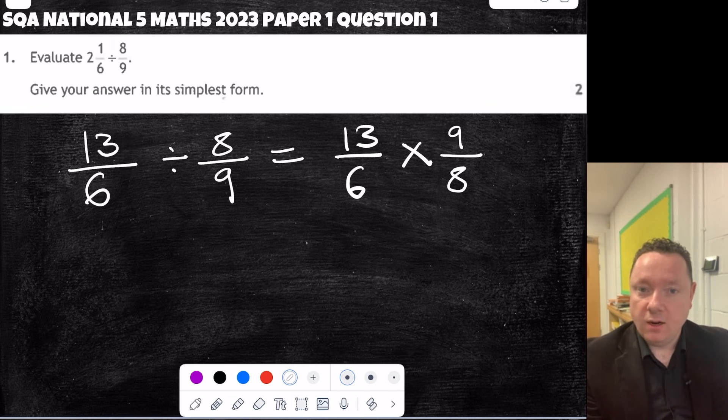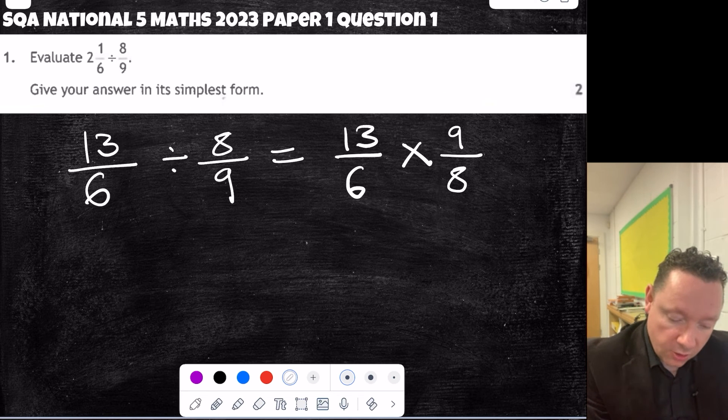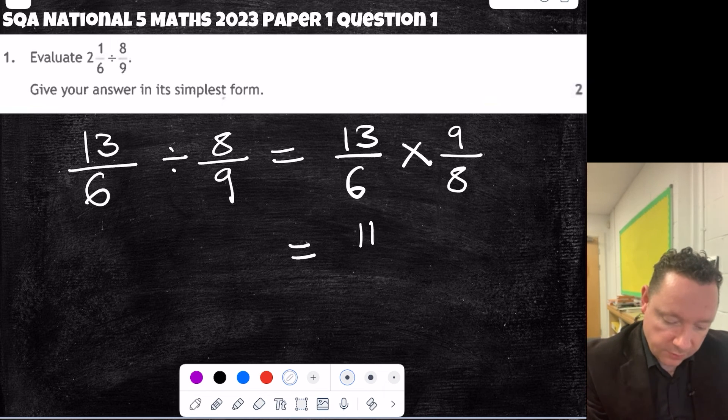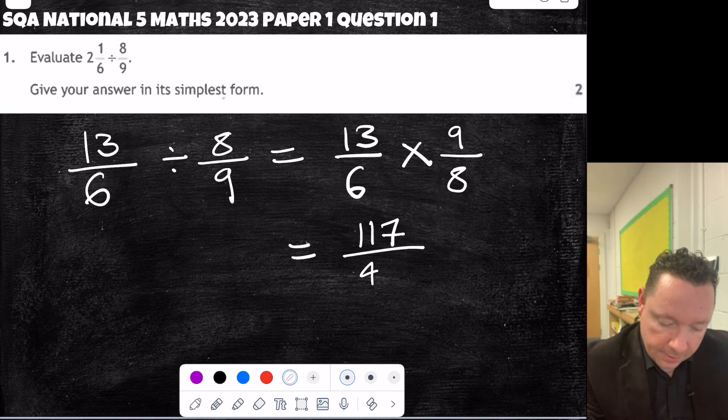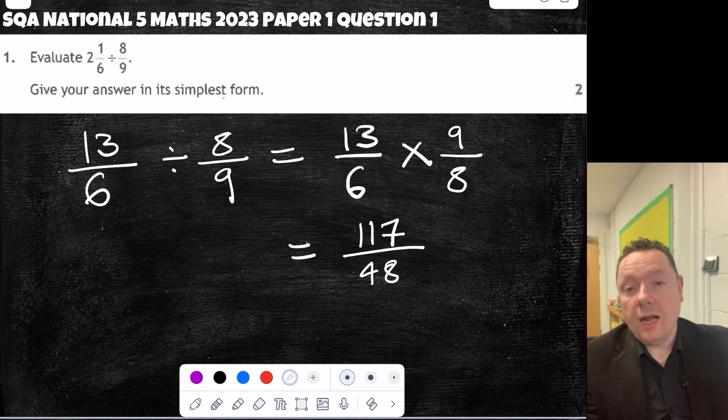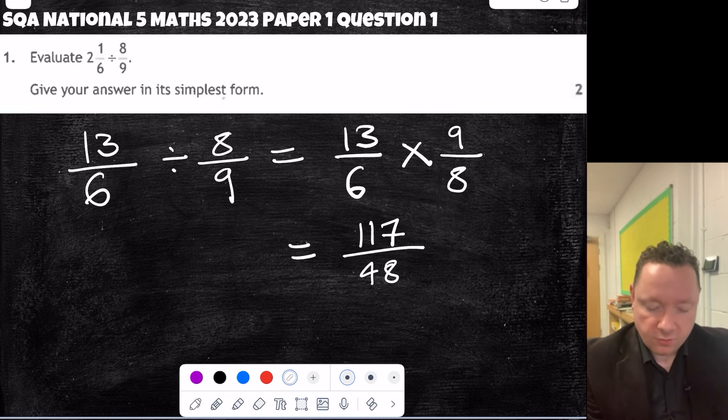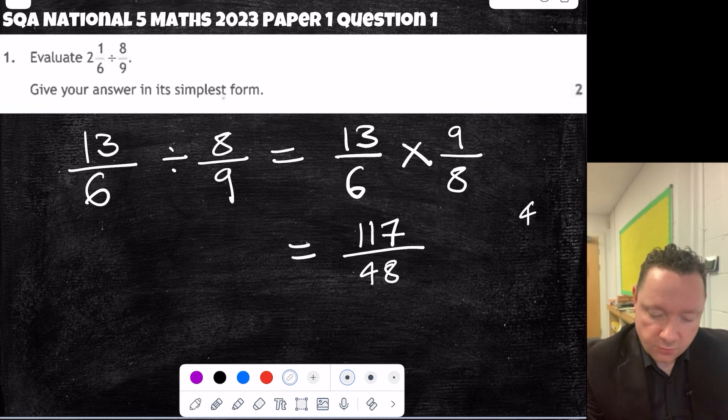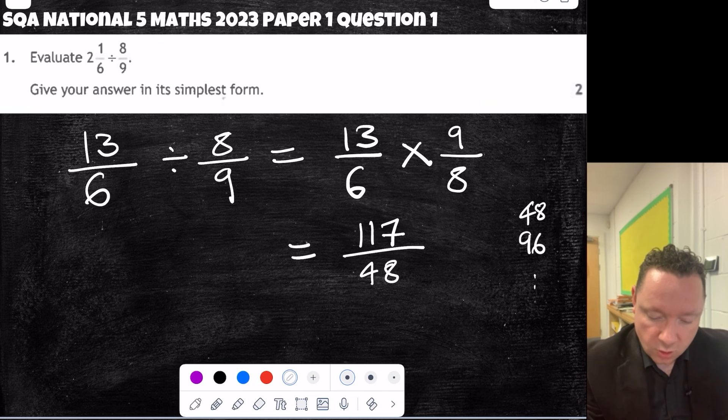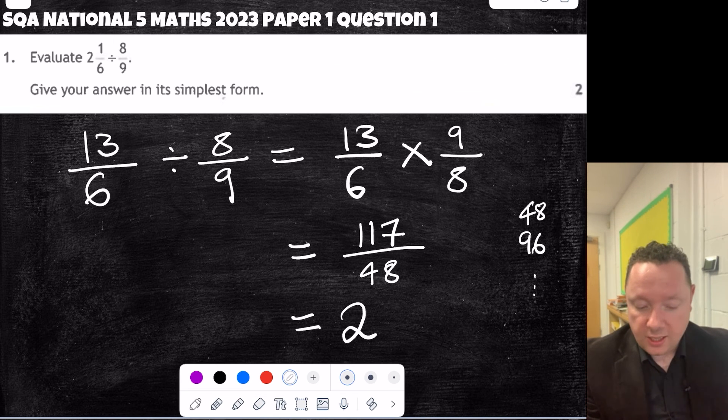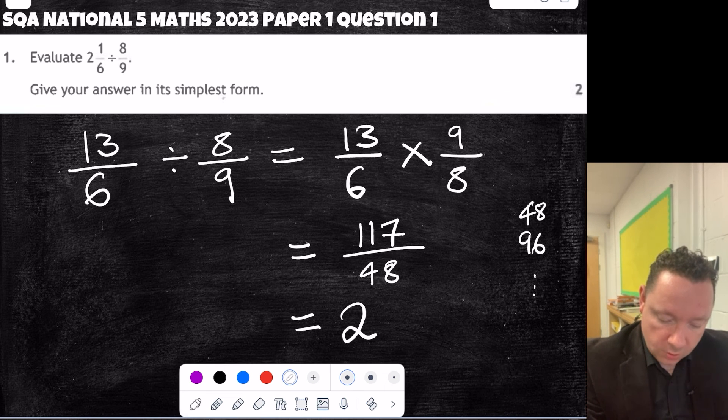So I need to do 9 times 13. 9 tens are 90, 9 threes is 27. 90 plus 20 is 110, 117. So you get 117 from the top, 6 eights is 48. Now, at this point, I always find when the numbers are bigger and it's an improper fraction, it's easier just to switch it back to a mixed number than simplify. So I'm going to just count in 48s. There's 48, there's 96, and then it's going to be too big. So that gives me 2, and then I want to know what's left over. So 117 take away 96, that's 21, 21 over 48.